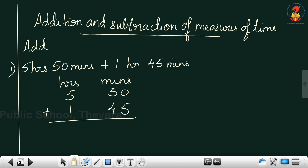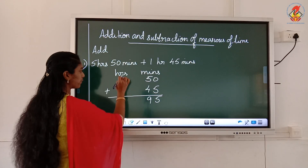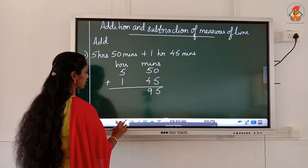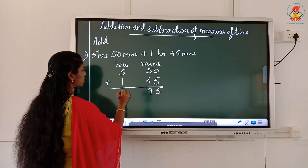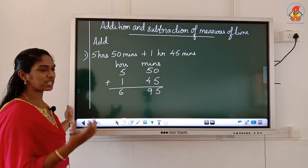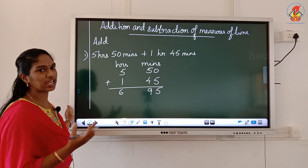What I have to do is first add the minutes. So when I add the minutes: 0 plus 5 is 5, 5 plus 4 is 9. So I got 95 minutes. Then 5 plus 1 I got 6. So I got 6 hours 95 minutes. Now I am going to rearrange this.